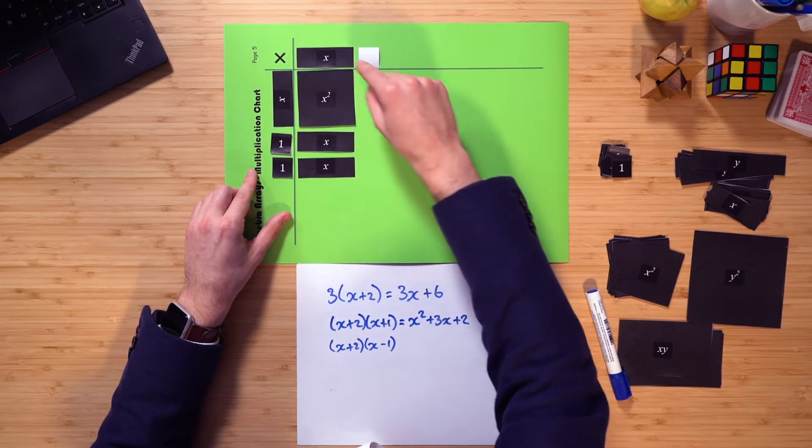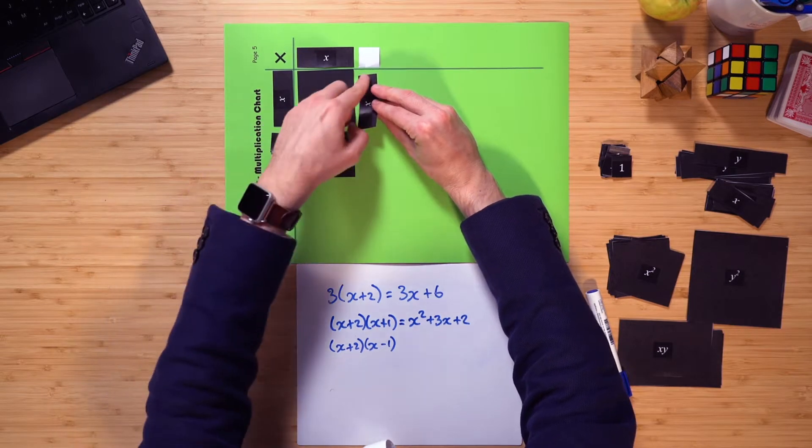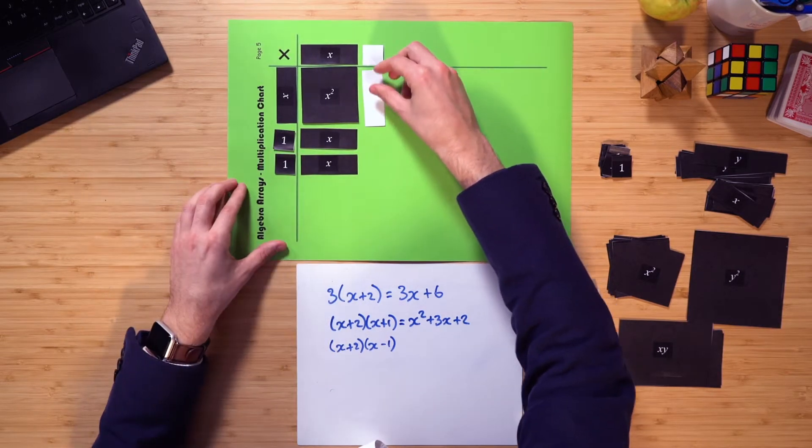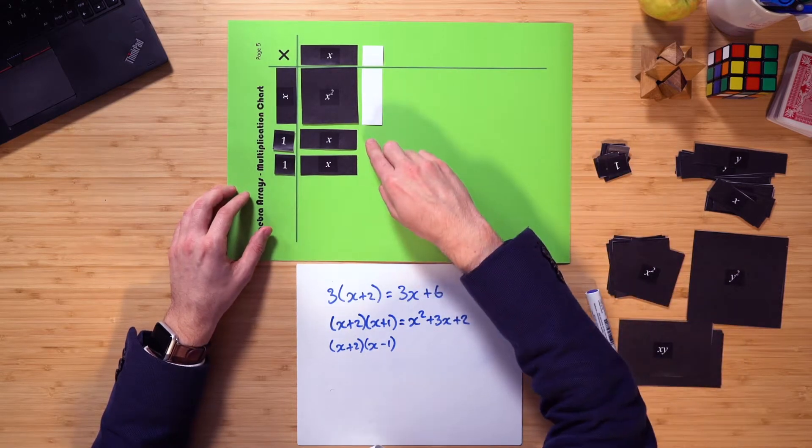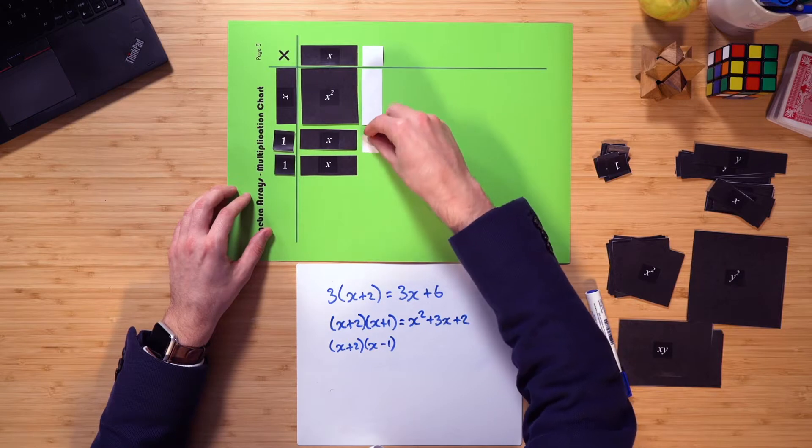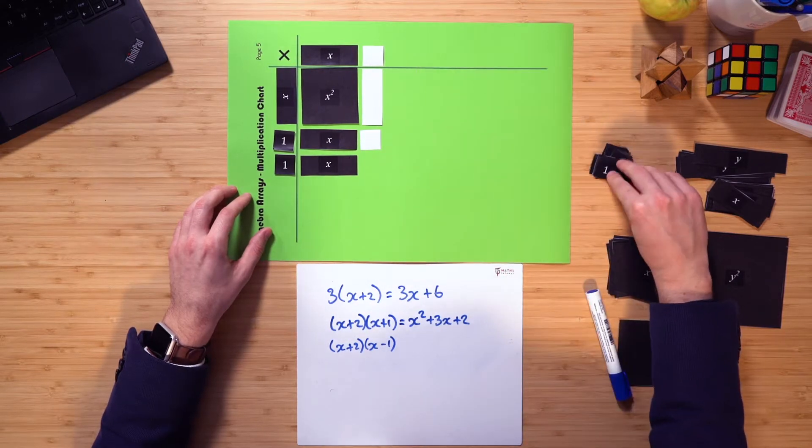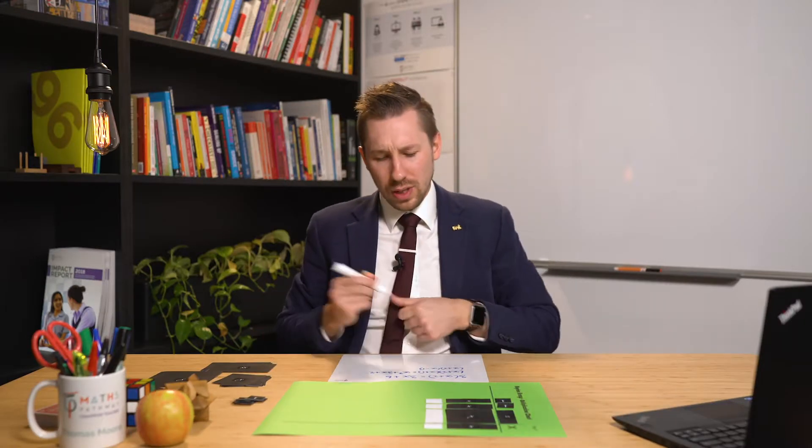What about here? Well, I have a height of x and a width of 1, so I know I'm going to be dealing with an x, but because they're different colors, it then becomes a negative x. What about here? Well, height of 1, width of 1, but then because they're different colors once again, it becomes a negative 1, and then that's going to be the same there as well.